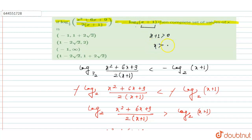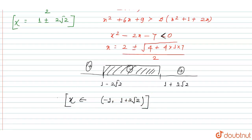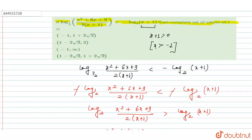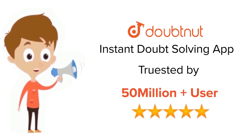Since log base 2 of (x + 1) is defined when x + 1 > 0, we need x > −1. Taking the intersection with x ∈ (1 − 2√2, 1 + 2√2), the required solution is x ∈ (−1, 1 + 2√2), open interval. Option A is the right answer. For class 6 to 12, IIT JEE and NEET level, trusted by more than 5 crore students. Download Doubtnut app today.